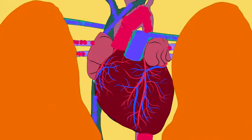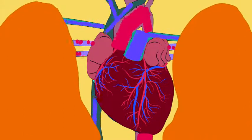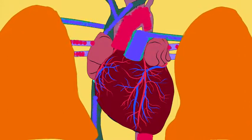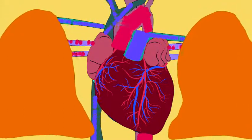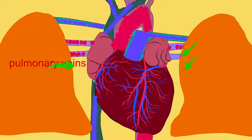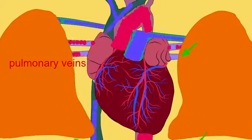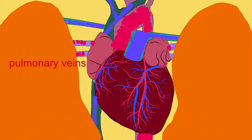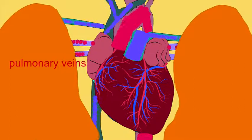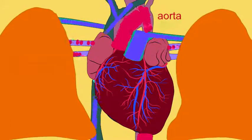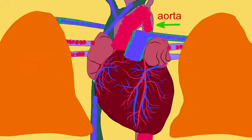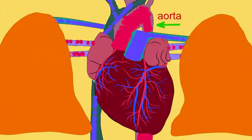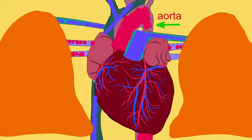This oxygenated red blood returns to the heart through pulmonary veins into the left atrium, and it is then the left ventricle which will pump the red oxygenated blood through the arch of the aorta to the systems of the body.